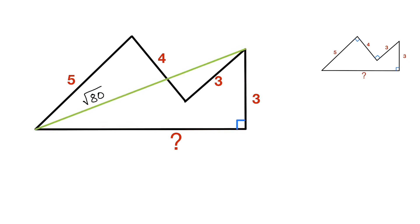Right, so this side by using Pythagorean theorem is equal to square root of square root 80 squared minus 3 squared, which is equal to square root of 80 minus 9, and that is equal to square root of 71.